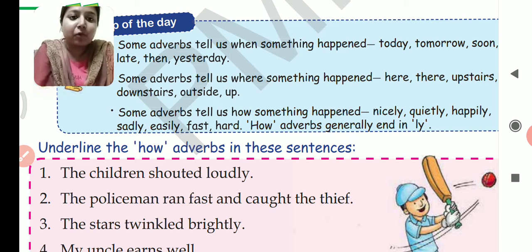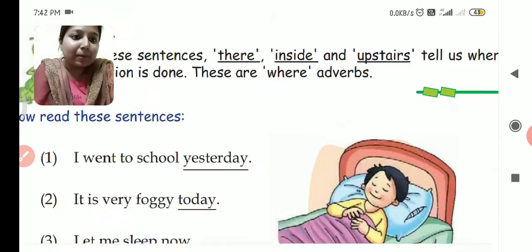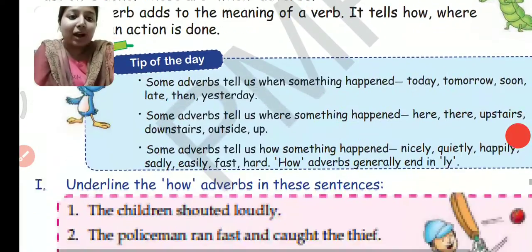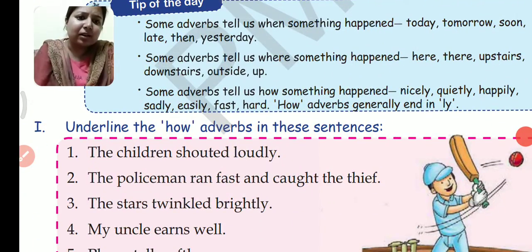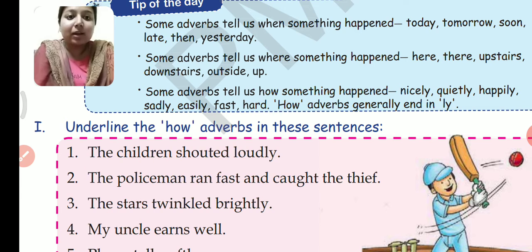For example, quietly, happily, nicely, easily — all ending in '-ly'. So I hope you understood the three kinds of adverbs: adverb of place, adverb of time, and adverb of manner — कैसे, कहां, और किस तरह से. An adverb simply adds meaning to the verb; it tells how the verb is happening and describes its qualities.